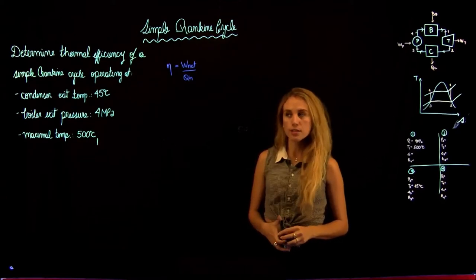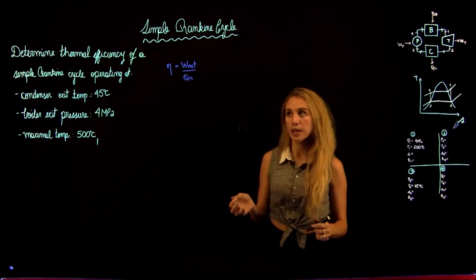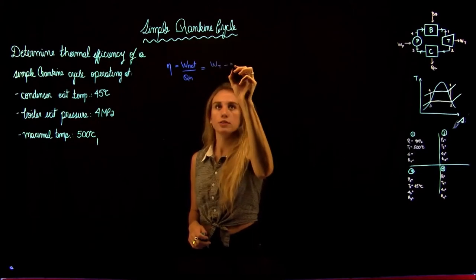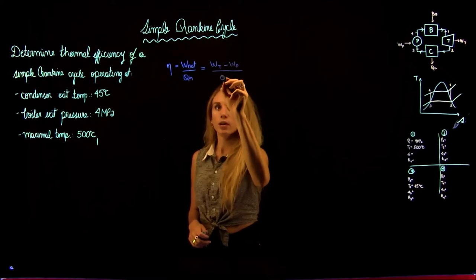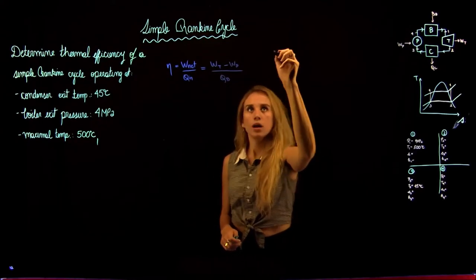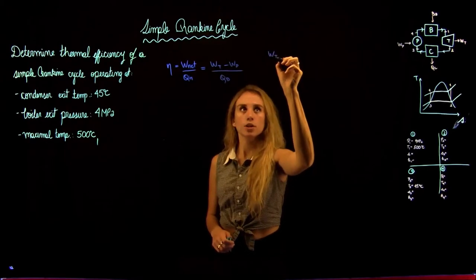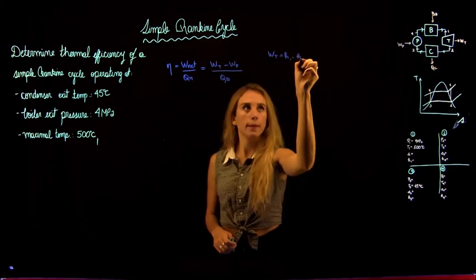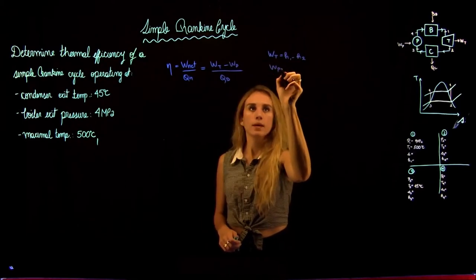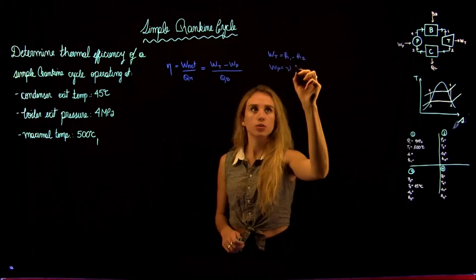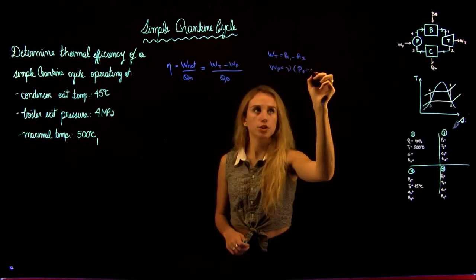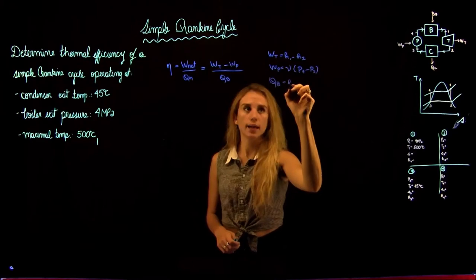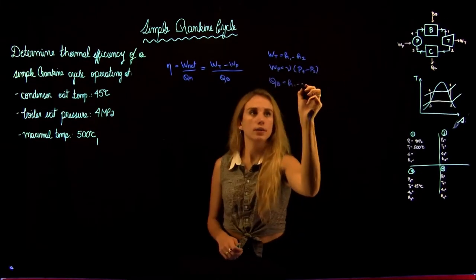We need to find the thermal efficiency, which is equal to the net work over the heat input. The net work is equal to the work out from the turbine minus the work in from the pump, over the heat in at the boiler. Recalling the formulas: the work of the turbine equals H1 minus H2; the work at the pump equals the specific volume times the pressure change from high pressure minus low pressure; and the heat in, Q_B, equals H1 minus H4.